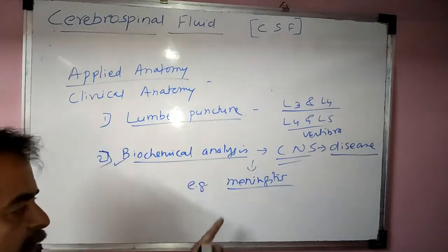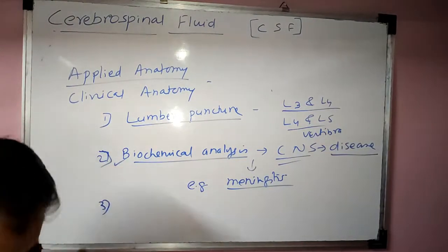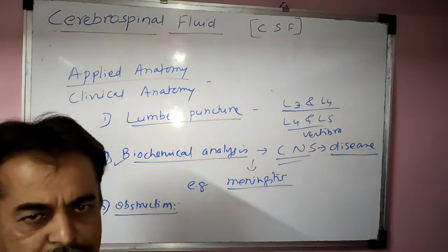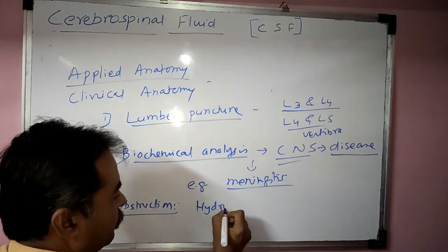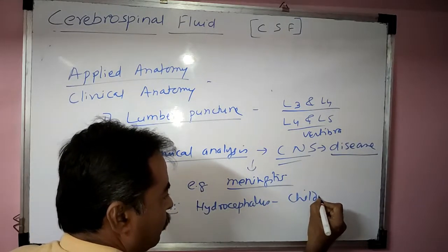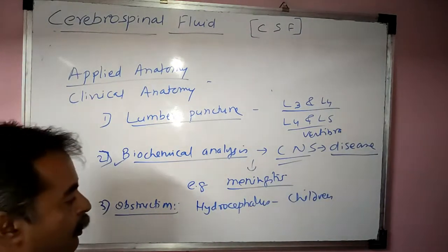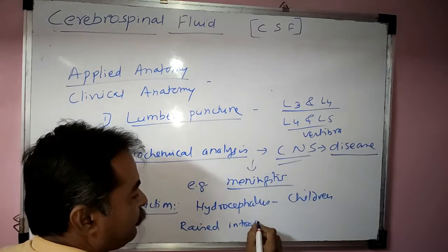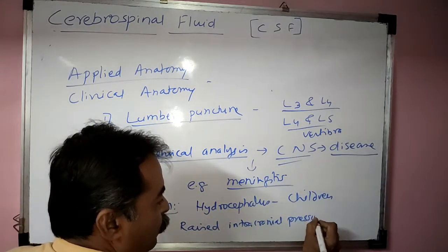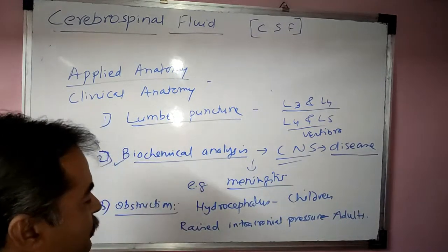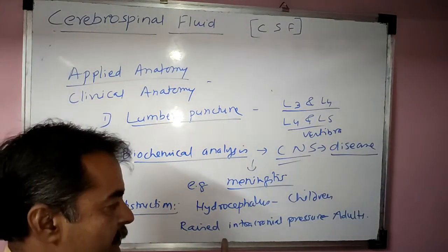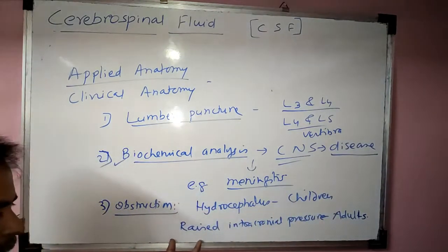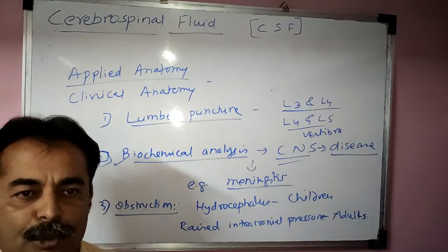For example, lumbar puncture is routinely done in cases of meningitis. The third applied point is obstruction of CSF flow, which causes hydrocephalus in children. In adults, obstruction of CSF causes raised intracranial pressure. This concludes our topic on cerebrospinal fluid.